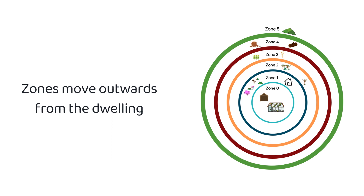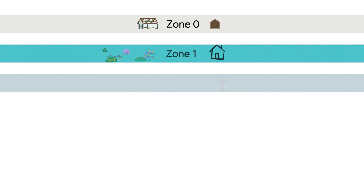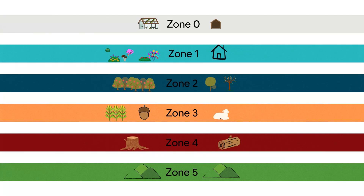In an ideal situation, the zones are visualised as a series of concentric circles. The most visited zones are the innermost zones, which require the most time and energy input. To manage them easier, they are located closest to the home or farm.